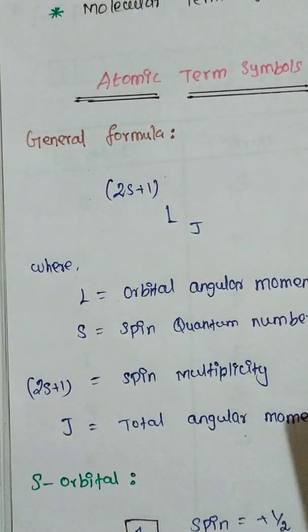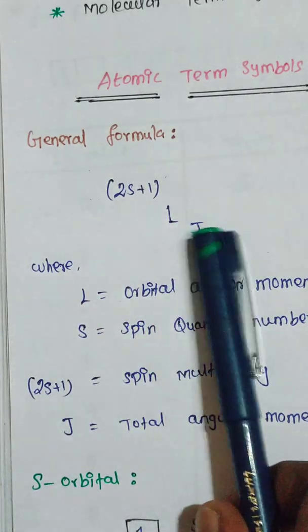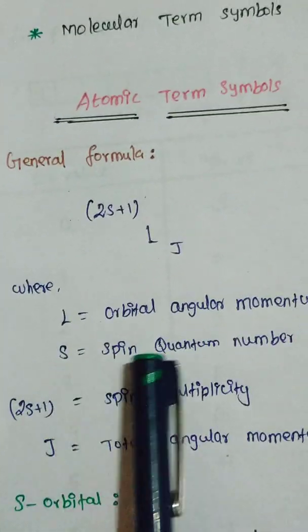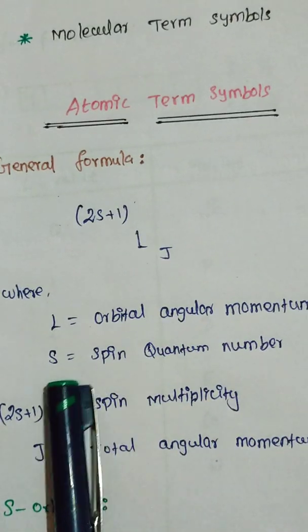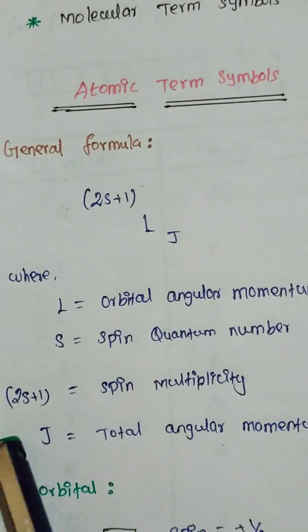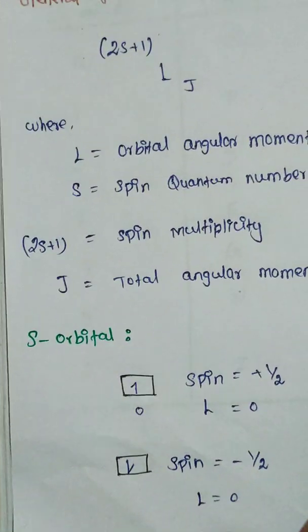The general formula of an atomic term symbol is 2S+1 L_J, where L is the orbital angular momentum, S is the spin angular momentum or spin quantum number, 2S+1 is the spin multiplicity, and J is the total angular momentum.